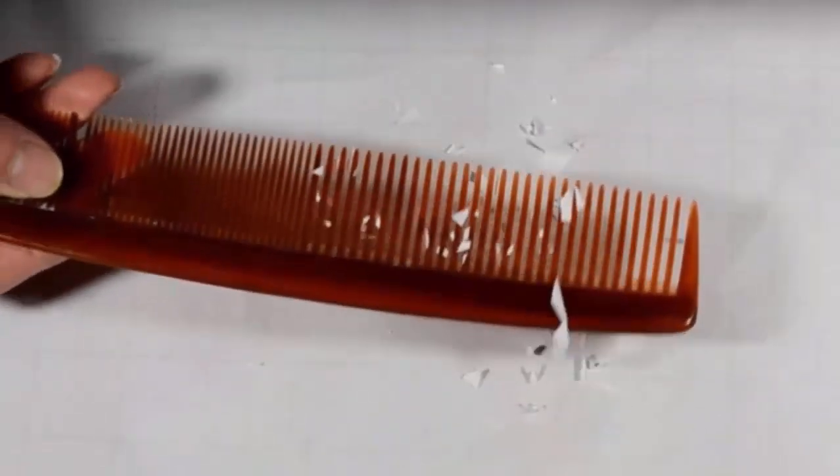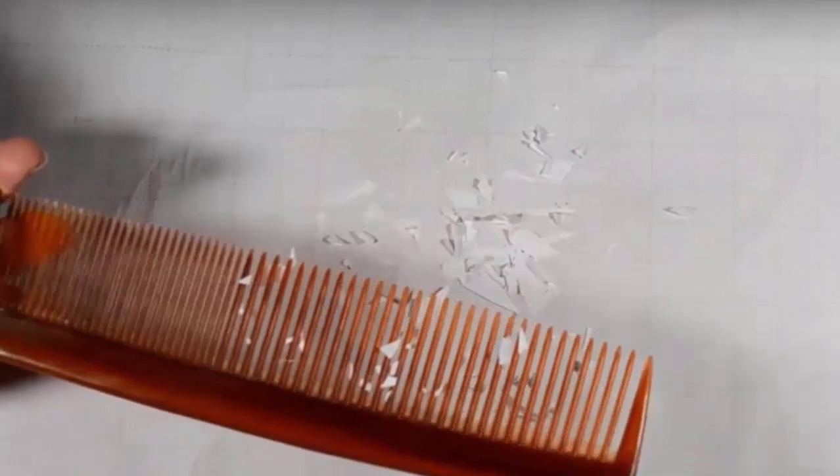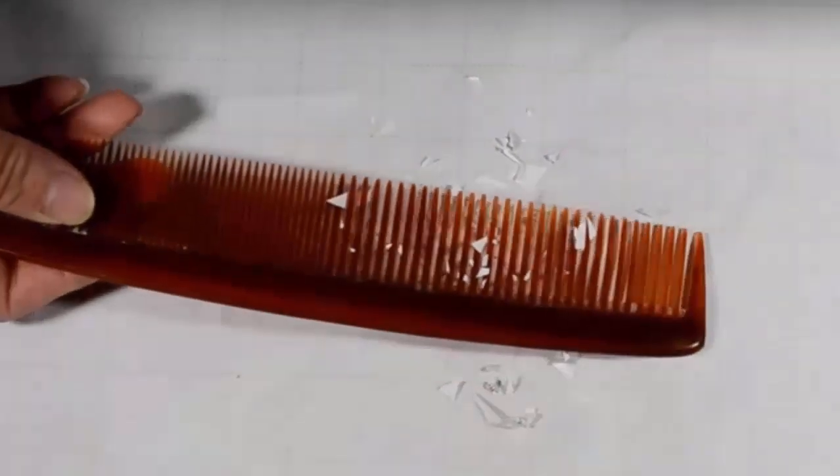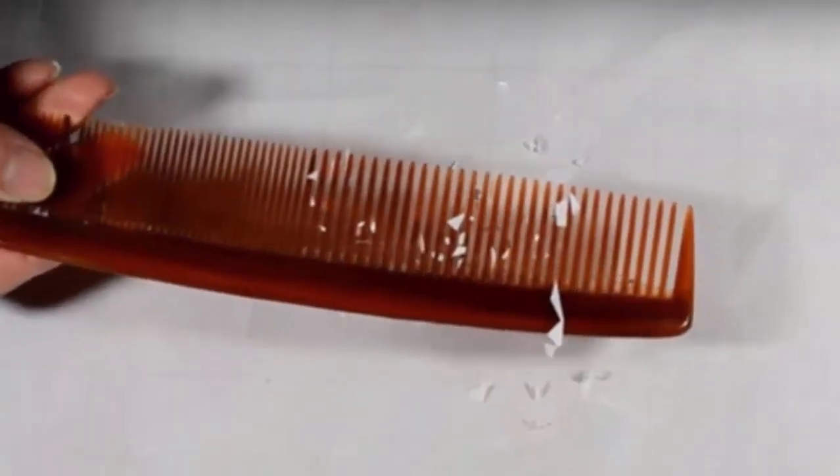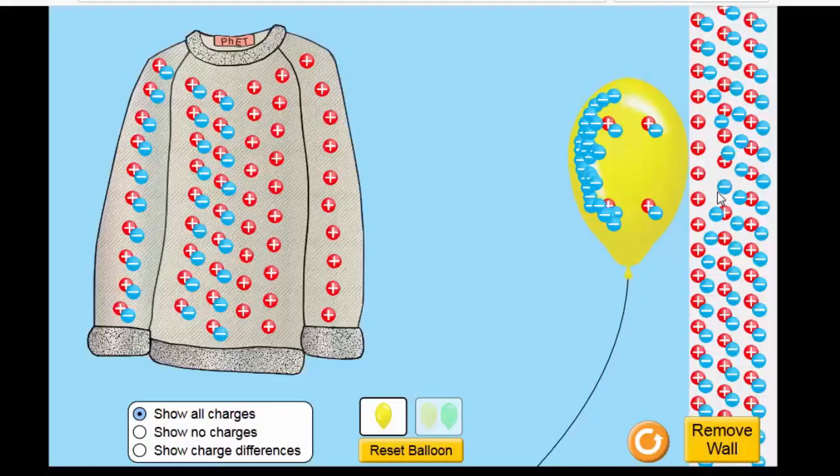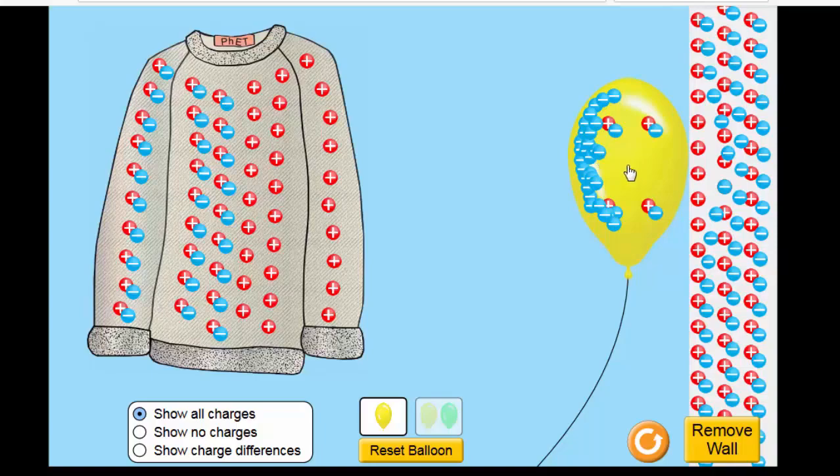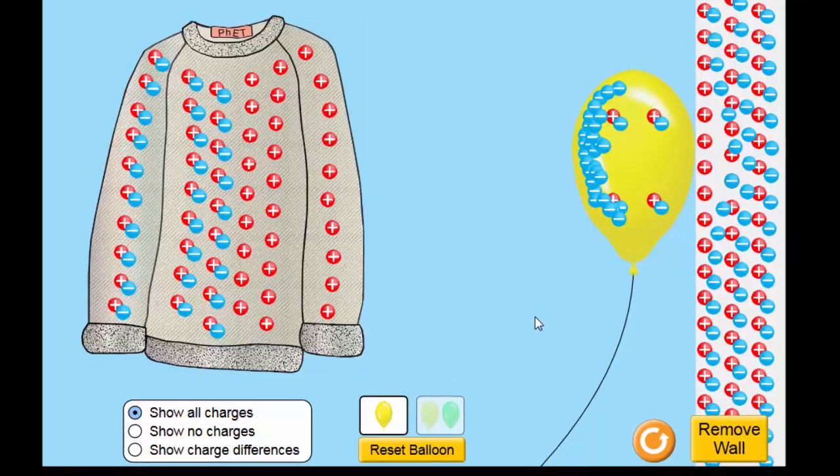So this is basically the same concept. The balloon that was rubbed against the sweater was able to charge the wall and get attracted to the wall. The same thing that happened to the wall will happen to those bits of paper, which is basically charging by induction. The balloon was able to induce positive charge here on the wall by repelling those negative charges. And most probably those negative charges can be grounded, while the positive charges will stay there because they are attracted to the negative charge of the balloon.